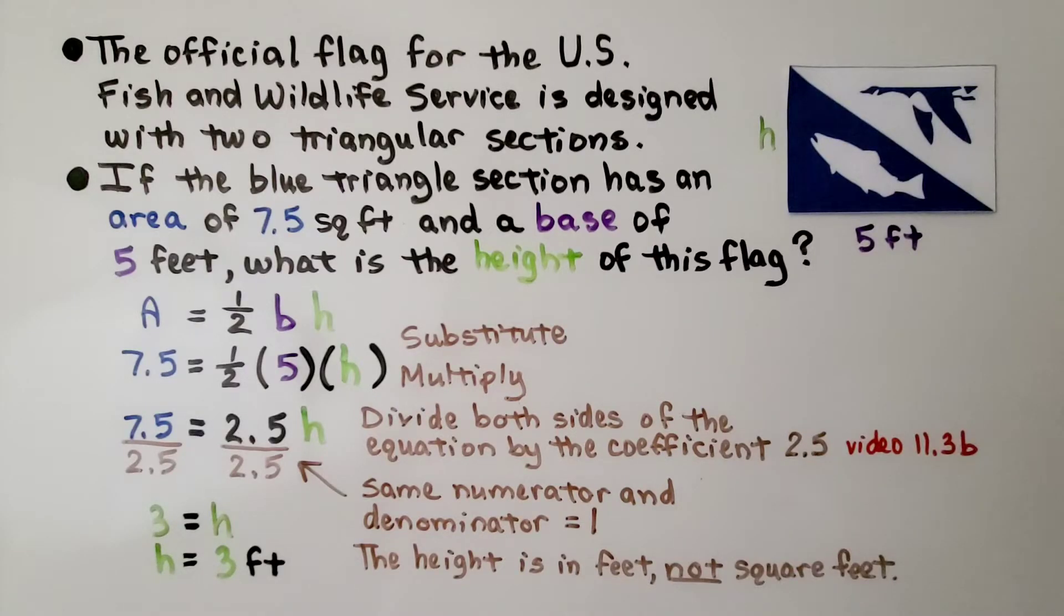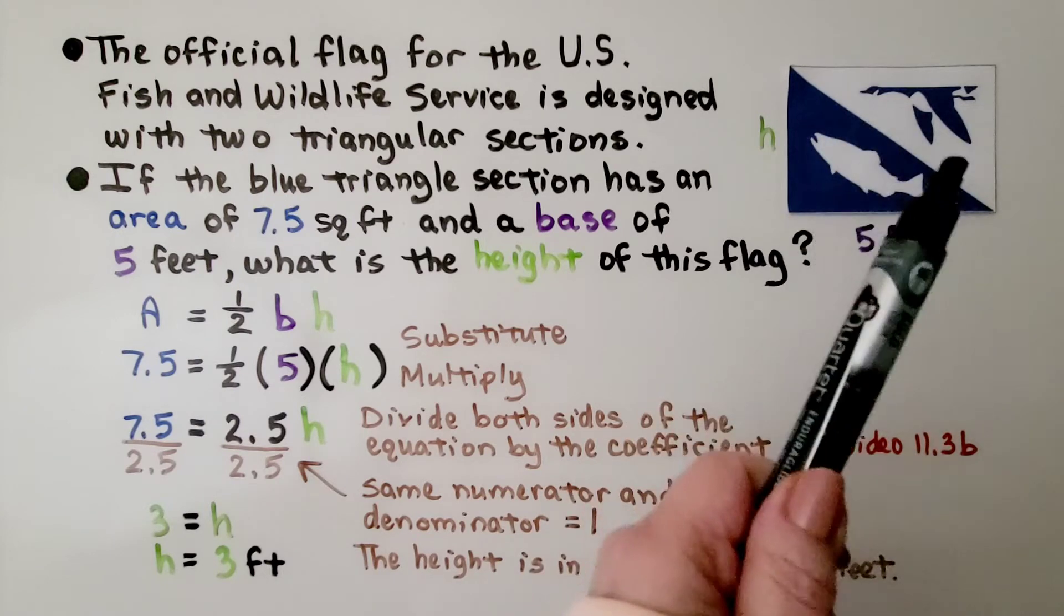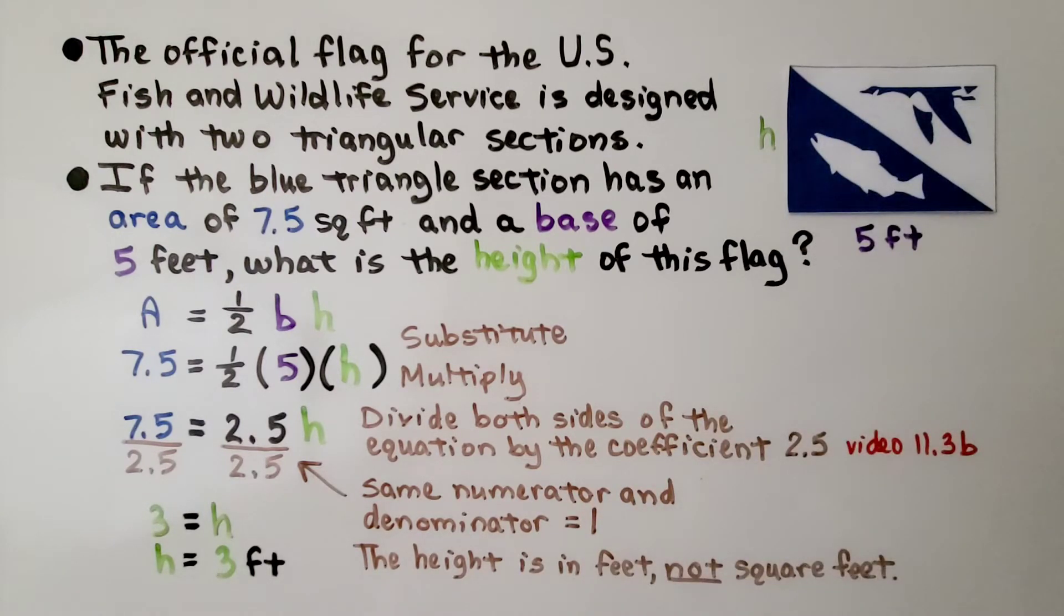The official flag for the U.S. Fish and Wildlife Service is designed with two triangular sections. We can see there is a blue section and a white section. If the blue triangle section has an area of 7.5 square feet and a base of 5 feet, what is the height of this flag?